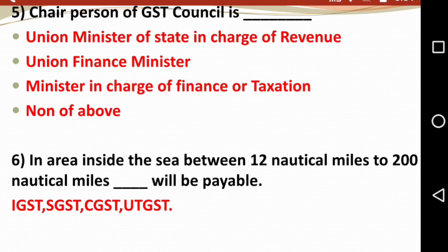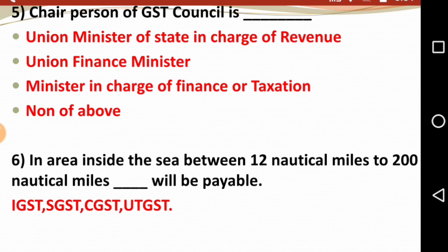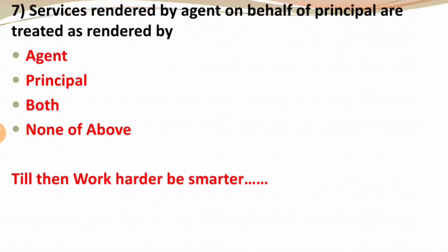Next question: In the area inside the sea between 12 nautical miles to 200 nautical miles, which tax will be applicable — IGST, CGST, SGST, or UTGST? The answer is IGST — Integrated Goods and Service Tax is applicable in the area inside the sea between 12 nautical miles to 200 nautical miles.